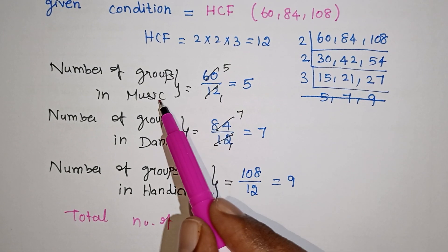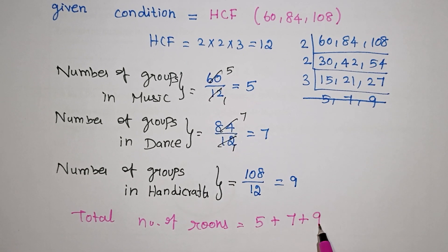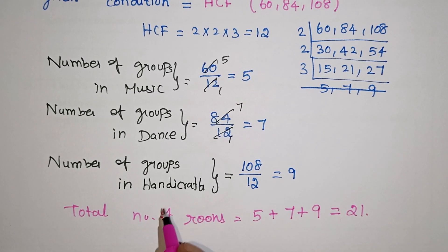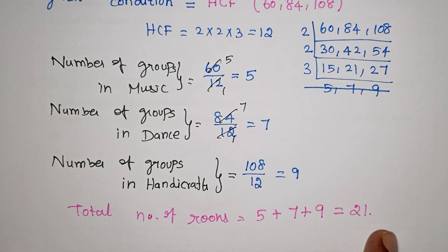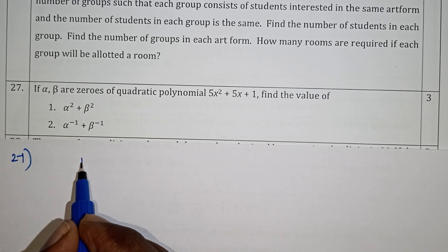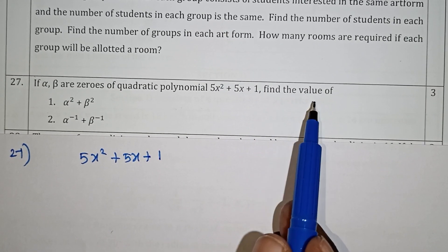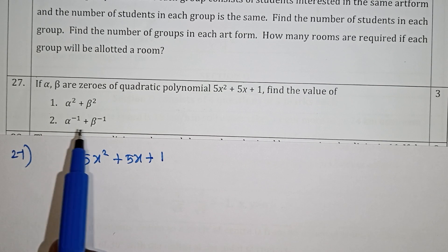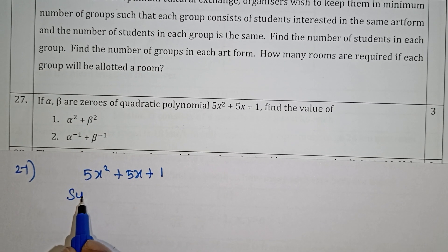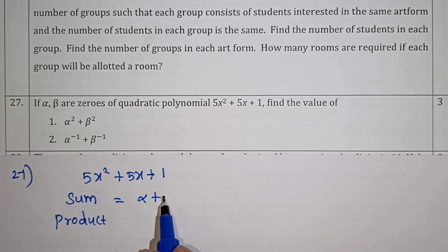Now, how many rooms are required if each group gets one room? Music group needs 5 rooms, dance group needs 7 rooms, and handicraft group needs 9 rooms. Total number of rooms required = 5 + 7 + 9 = 21 rooms.